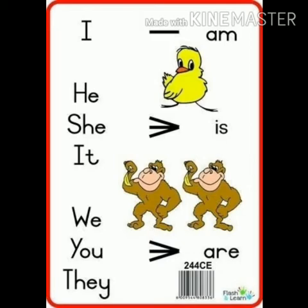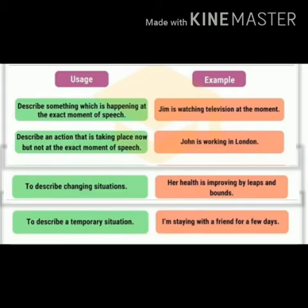In present continuous tense there are three types of helping verbs: is, am, and are. 'Am' is used only with 'I'. 'Is' is used with he, she, it, or any singular noun. 'Are' is used with we, you, they, and any plural nouns.